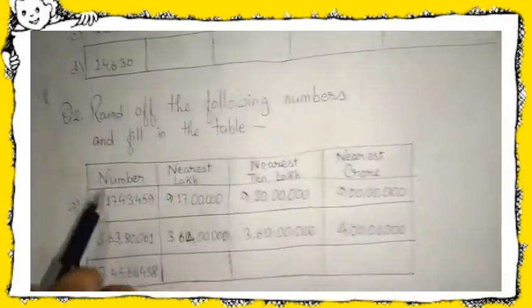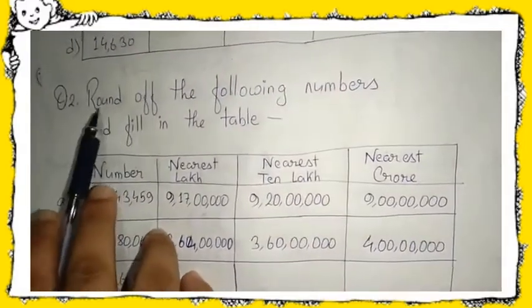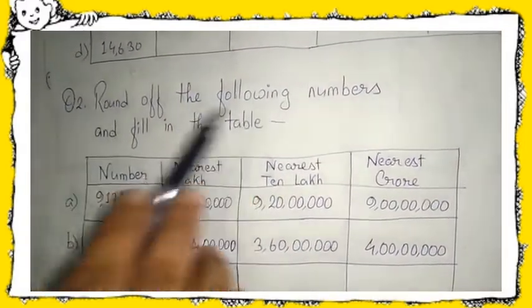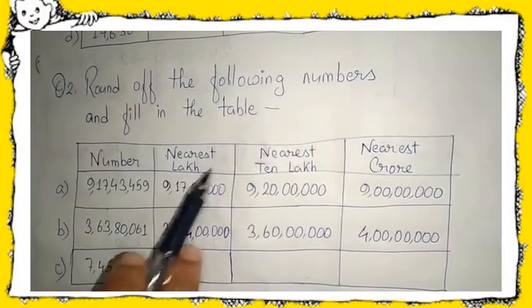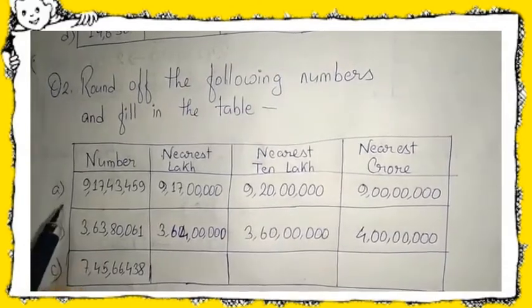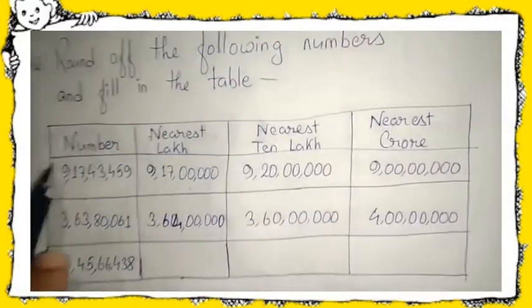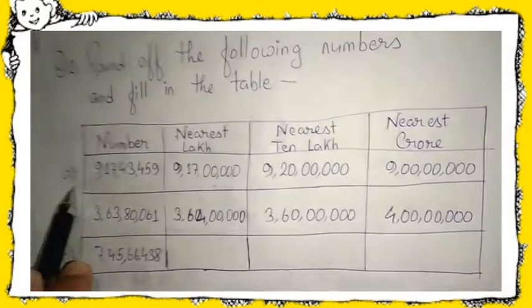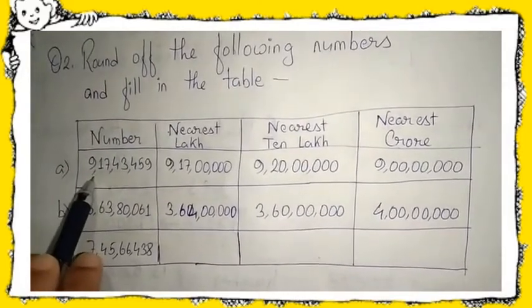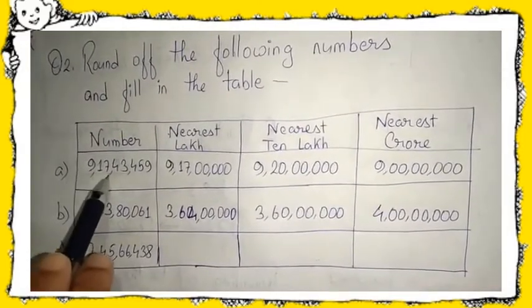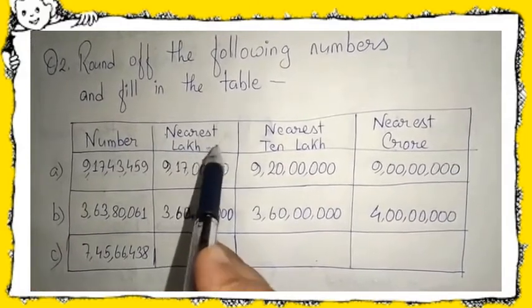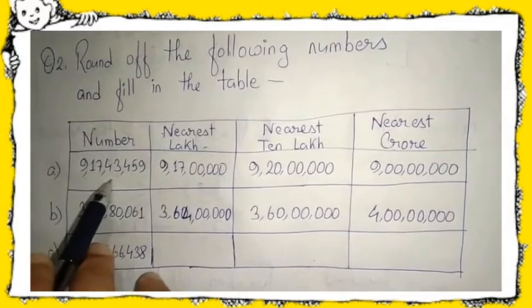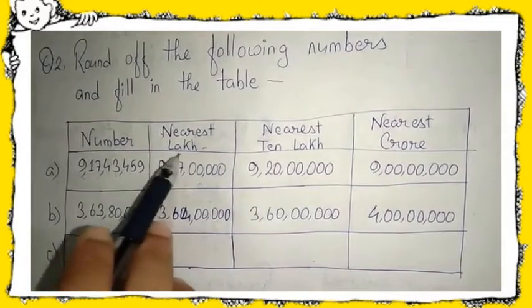Let us go to question number two. This is also the same — you have to round off the following numbers and fill in the table, but here you will fill the table to the nearest lakh, ten lakh, and crore. I have done two and one is your homework. Let us see part A first: it is given nine crore seventeen lakh forty-three thousand four hundred fifty-nine. First, you have to round it to the nearest lakh.